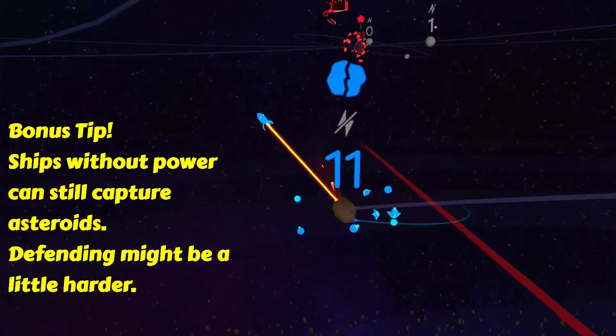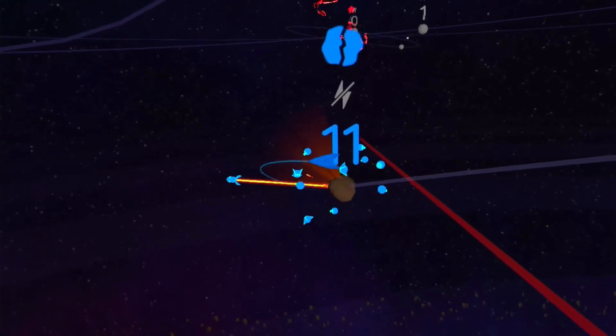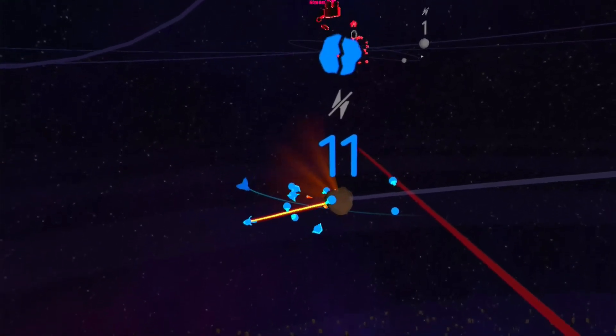Alright, one of the things you might not know is even though your ship does not have power to shoot, it's possible for it to mine an asteroid.